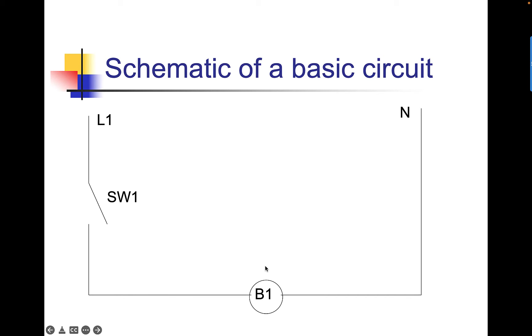It's the little gate-looking thing labeled SW1. And we have a load labeled B1. We're going to call that a light bulb. Bulb 1. Basic circuit. So we have our source. We have our path, which is the connecting wire. We have our switch, SW1. And we have the load, B1.